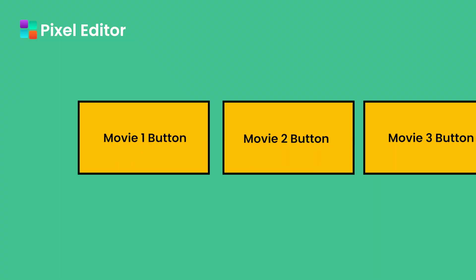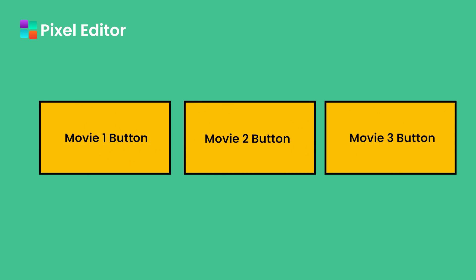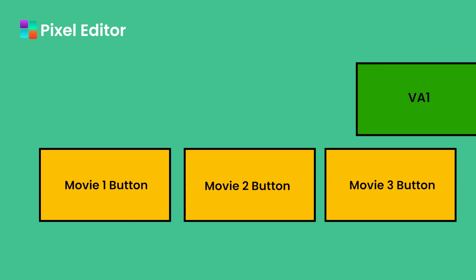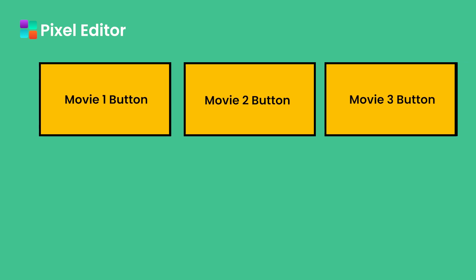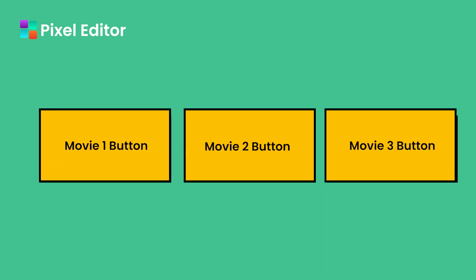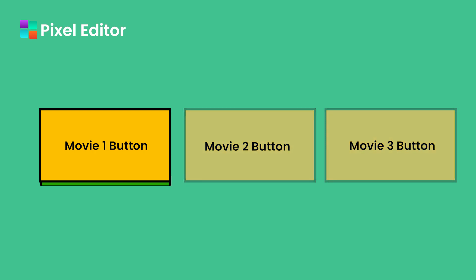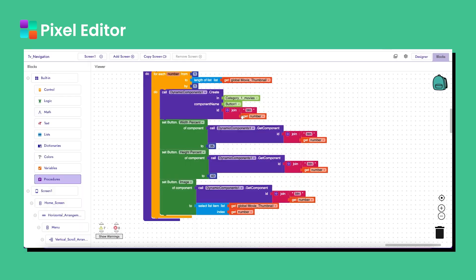Before that, let's understand a simple concept. This is the list of buttons already created. What we will do is create a dynamic list view for vertical arrangements and drag the button into that vertical arrangement. We will add a margin of two to five pixels to the button, then change the background color of the vertical arrangement: when a button gets focus, we set a color; when it loses focus, we keep it transparent.